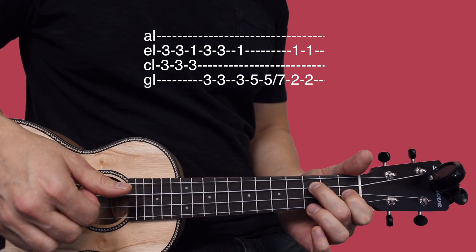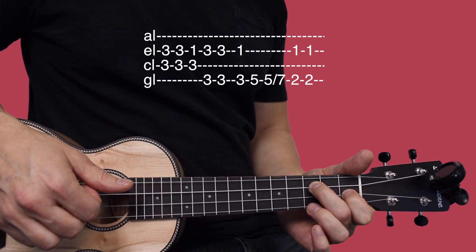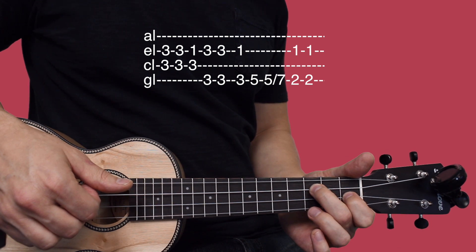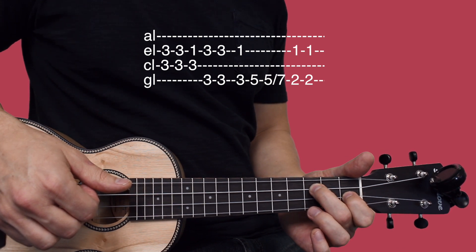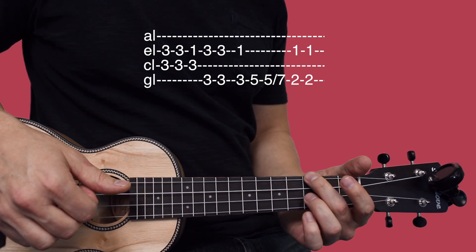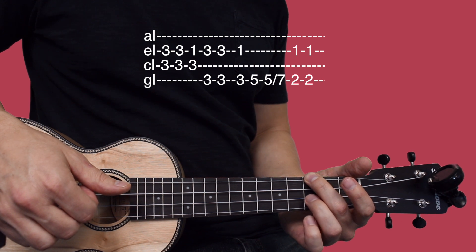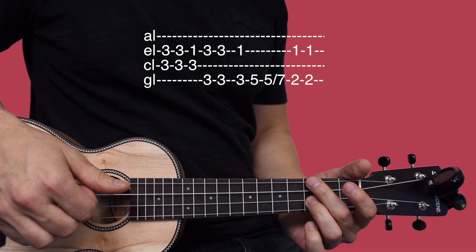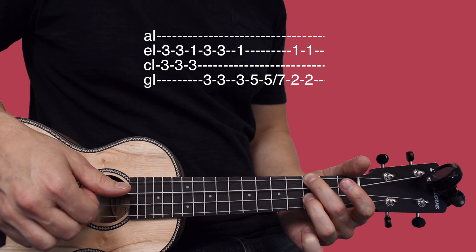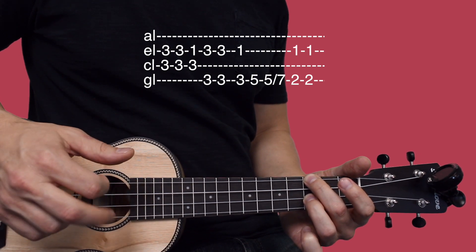Alright, now the next chord: see where your middle finger is on that third fret of the third string? Hop it up to the third fret of the fourth string, and then add your ring finger to the third fret of the second string. Now I'm going to use my thumb and my middle finger.